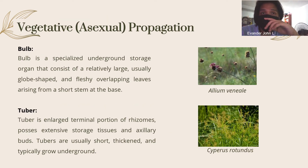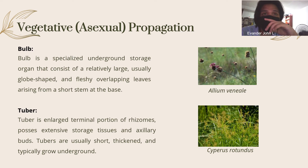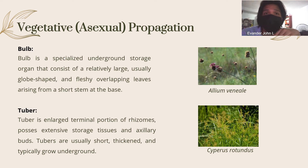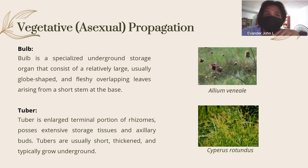A bulb is a specialized underground storage organ that consists of a relatively large, usually globe-shaped, fleshy overlapping leaves arising from a short stem at the base. A tuber is an enlarged terminal portion of rhizomes that possesses extensive storage tissues and axillary buds. Tubers are usually short, thickened, and typically grow underground.